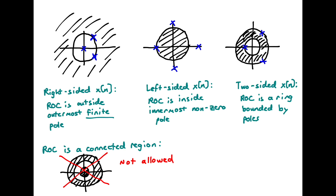Now let's comment on a few remaining properties of the region of convergence. If we have a right-sided sequence, the region of convergence is going to be outside the outermost finite pole. For example, a signal with three poles — two on a circle and one at Z equals zero — has a region of convergence outside the radius of the outermost pole. This also reminds us that poles and zeros don't have to be on the real axis; they can be anywhere in the complex plane.